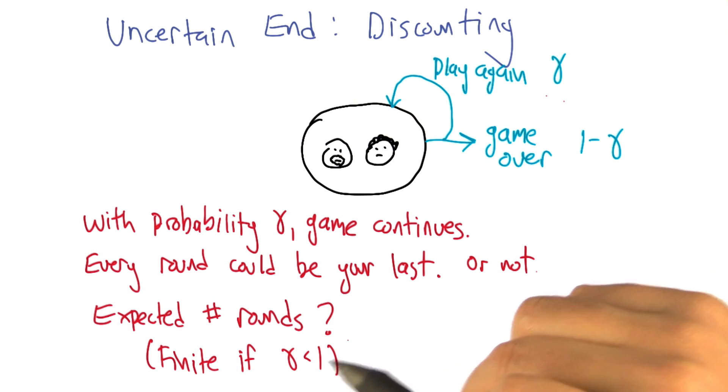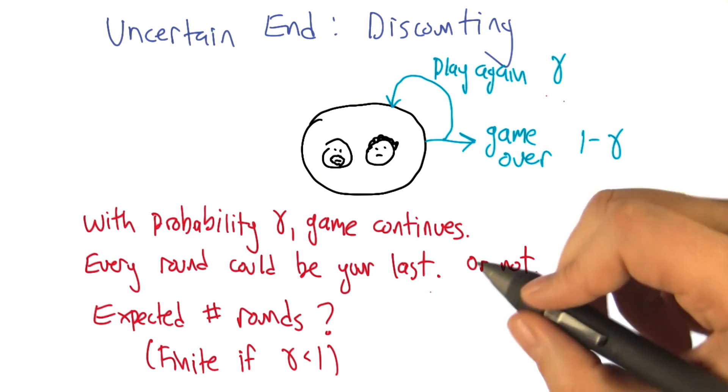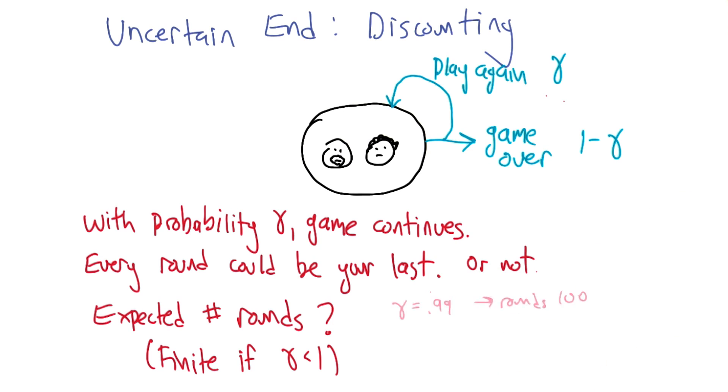Sure, but specifically, we can actually write it as a function of gamma. Let's see. If gamma were something like 99%, then I would expect it to be about 100, right? Yeah, I think that's right. Yeah. So is that your answer? My function of gamma is, if gamma is 0.99, the answer is 100.